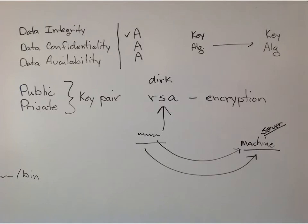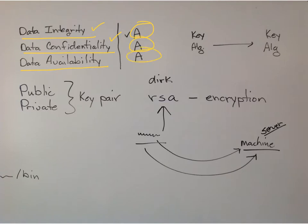Security — we talked about data integrity: is the data accurate? Data confidentiality: who can see what data? And then we have to keep data available. We talked about authentication, authorization, and accounting.